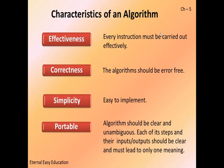Effectiveness: every instruction must be carried out effectively — that means very clear and proper steps. Next, correctness: the algorithm should be error-free. For example, when computing a student's average with decimal values, using float correctly so there are no rounding errors — that is correctness.